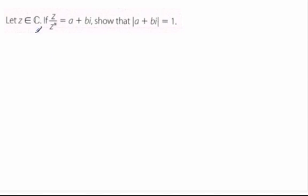In this example, z is a complex number, and z divided by the conjugate is equal to a plus bi. I want to show that the modulus of a plus bi is equal to 1.